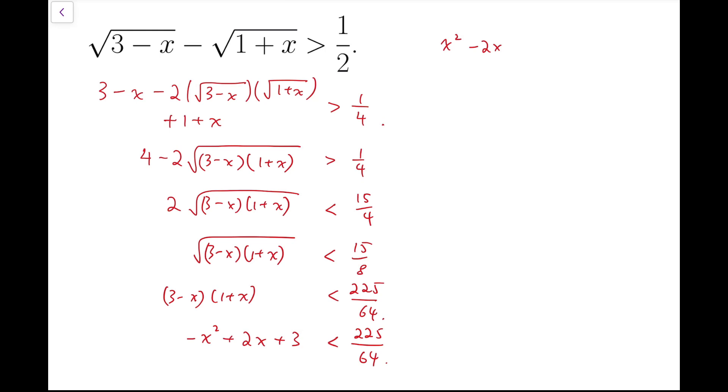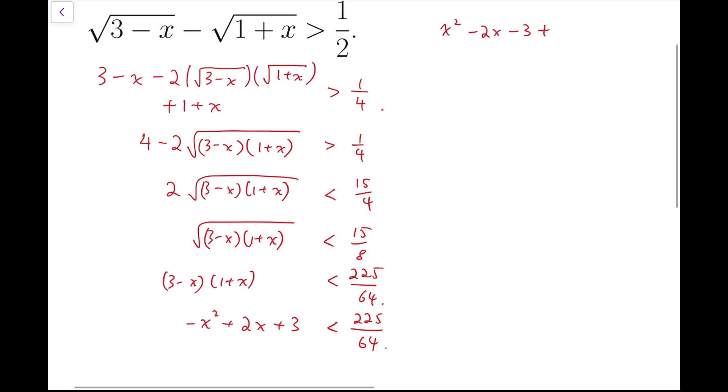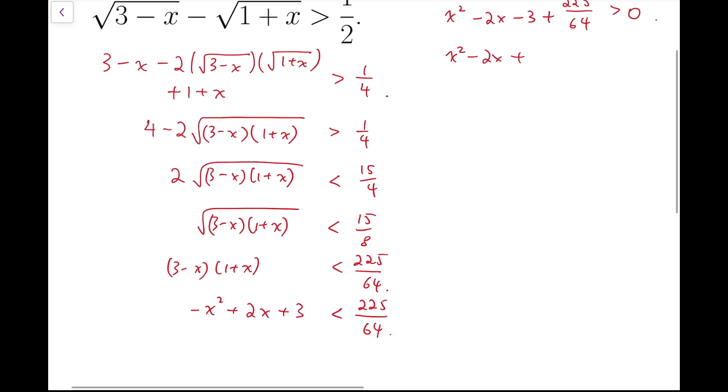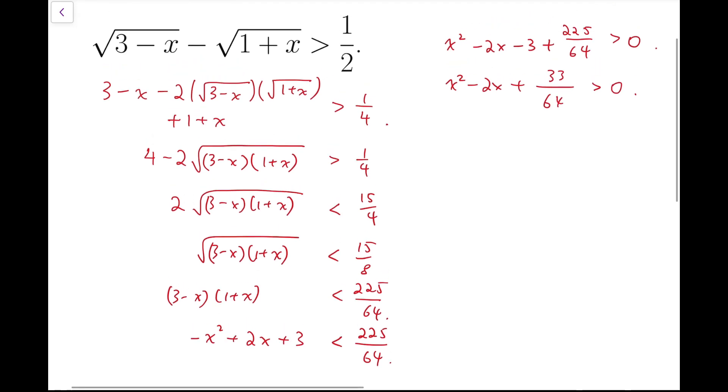So that means I'm going to have minus 3, it's not minus, it's plus 225 over 64, to be greater than 0. So this polynomial is actually x squared minus 2x plus 33 over 64 is greater than 0.